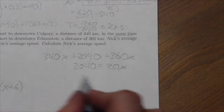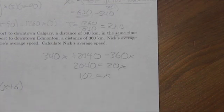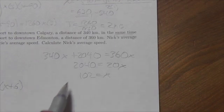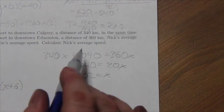Okay, and so if you divide, you get 102. Okay, so X is equal to 102 kilometers an hour.